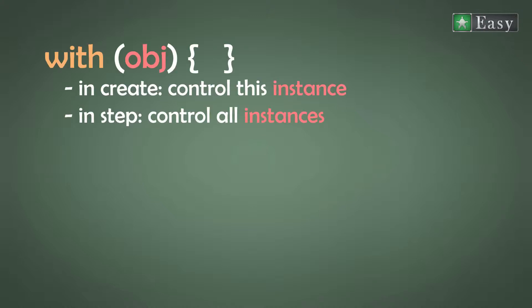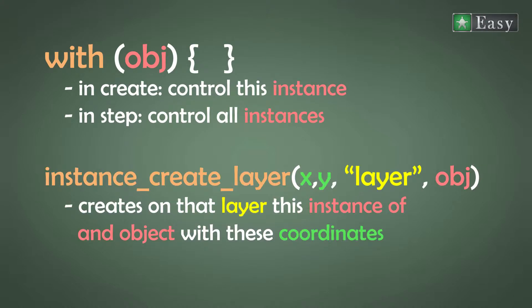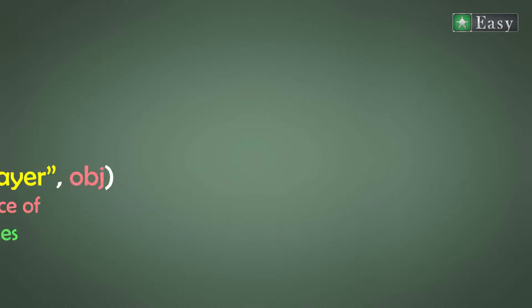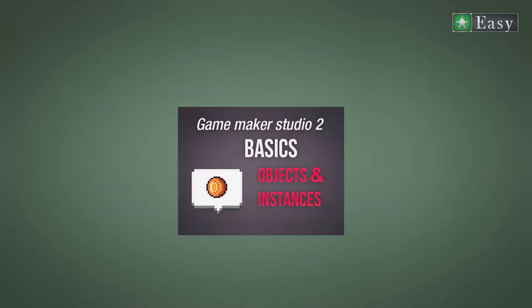To do that creation, I introduce to you two very powerful functions: the 'with' and the 'instance_create_layer'. They are used to create instances during runtime. The 'with' function simply gives you access to the variables of the created instance, and the 'instance_create_layer' function creates a new instance on that layer. More details on both in my quick and dirty basics video.